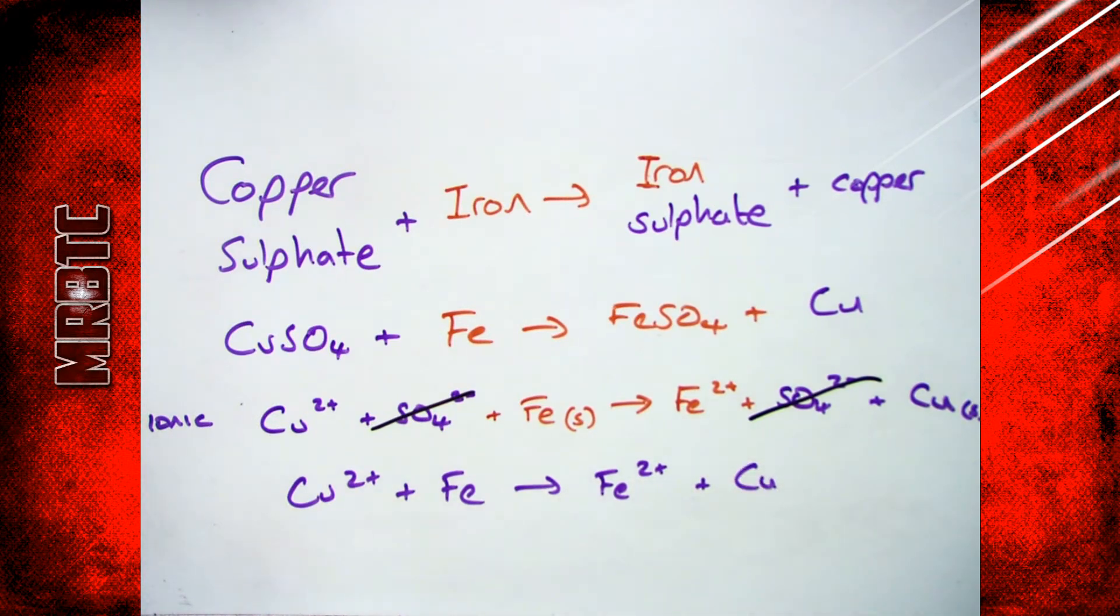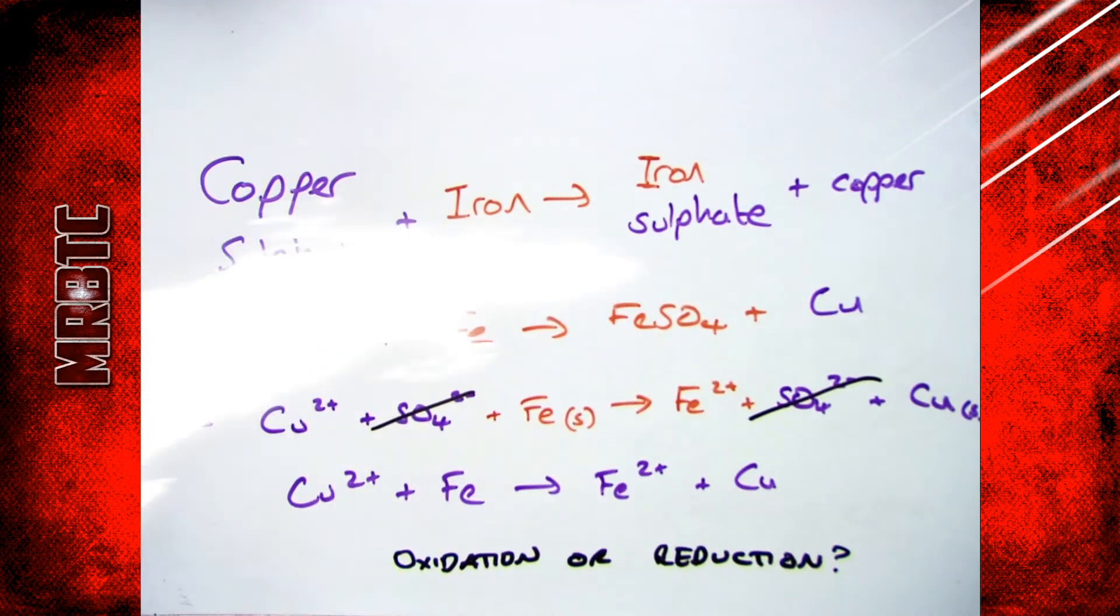So how can you use this to find out if something's been oxidized or reduced? If you remember the phrase that I told you, OIL RIG: oxidation is loss of electrons, reduction is gain. So what we need to do is write the half equations.